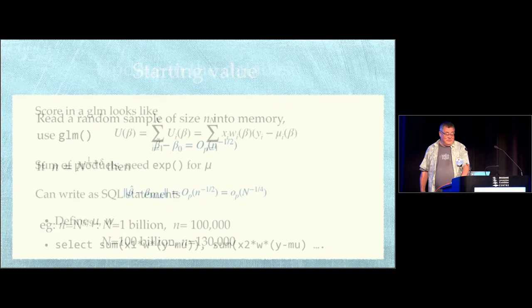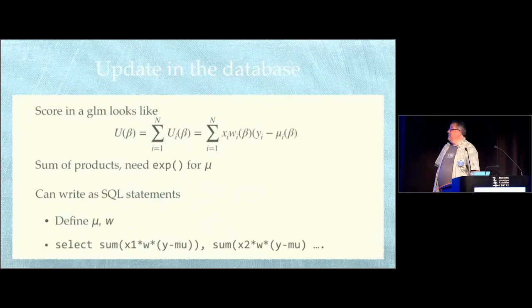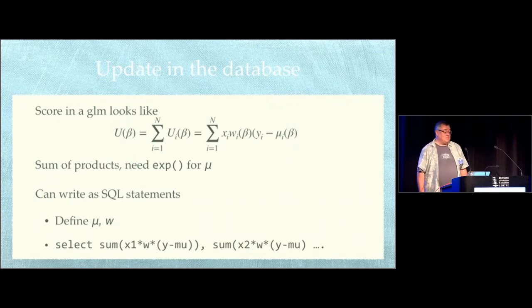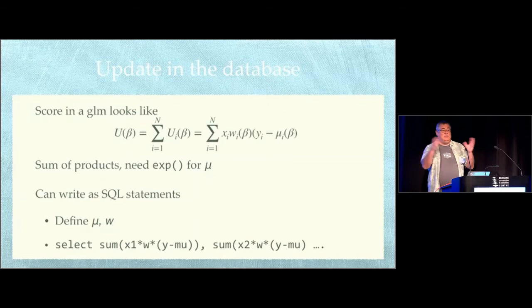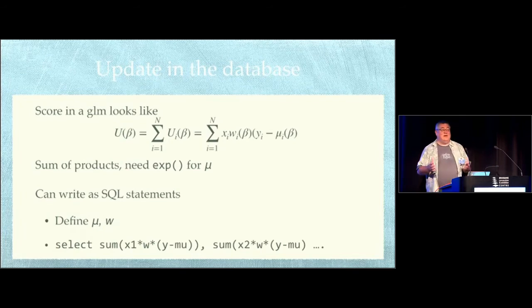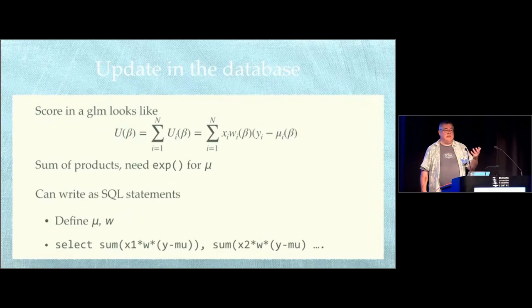We still need to do the update using all the data, but the update in a GLM is just a sum of products plus a little bit of other computation to get the fitted mean. And we can do this in SQL. So if we can write complicated SQL statements to compute the W and mu, and then the score is just a sum of products. And the complicated functions aren't that complicated. For the most common generalized linear models, that W is just one, and the mu is not very hard. It's the linear predictor with the transformation. So it's not that hard in R to write code that will write SQL to compute that update.